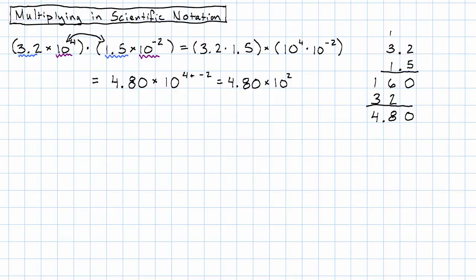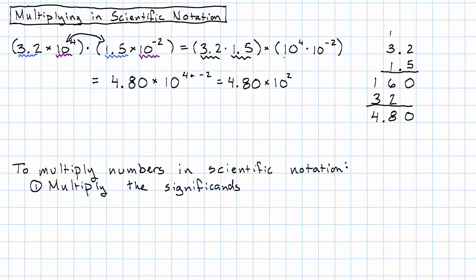What's our procedure then? Our procedure is going to be: we're going to multiply the significands, and we're going to multiply the order of magnitude, but that amounts to adding the magnitudes. And then there's a possibility that we'll have to fix the scientific notation.